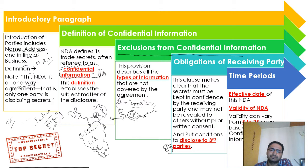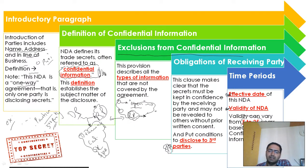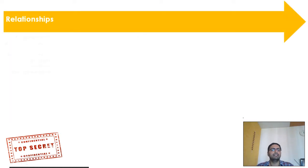The fifth clause is the time period. There are two or three important points here: the effective date — from which date the NDA becomes effective — and the validity period, meaning until when the secrecy must be maintained by the receiving party. In practice, this typically varies from 5 to 25 years, depending on the type of trade secrecy involved.